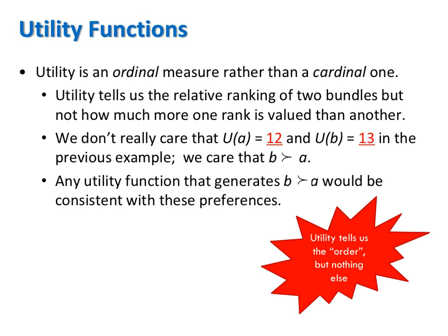We don't really care in the previous example that 12 was the number of utils from A versus 13 from B. What we did care about was that 13 was bigger than 12, so B was strictly preferred to A. Any utility function that generated B being strictly preferred to A would be consistent with these preferences.